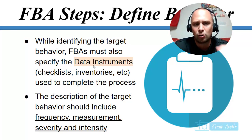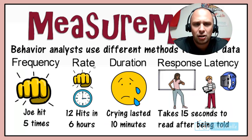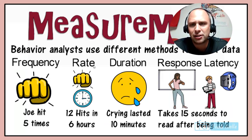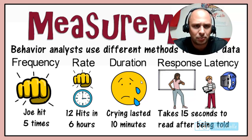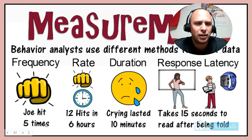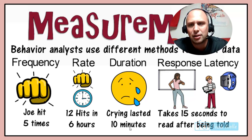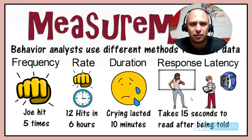The description of the target behavior includes frequency, measurement, severity, and intensity. Frequency is how often the behavior occurs — for example, Joe hits five times. Rate is expressed as, say, 12 hits in six hours. Duration would be that crying lasted for 10 minutes. And intensity might measure how hard a hit was. These distinctions are important for data-driven assessment.